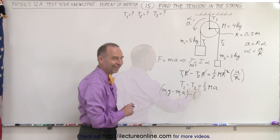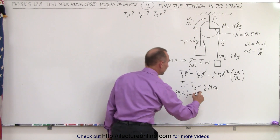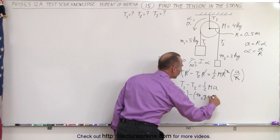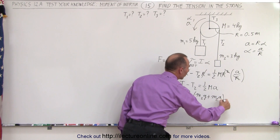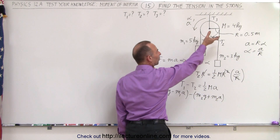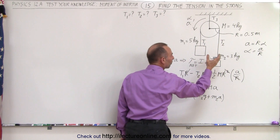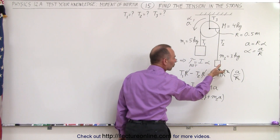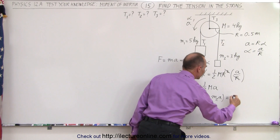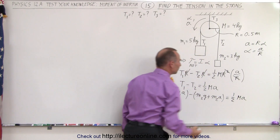And T2 is going to be m2·g plus m2·a, because the small weight is going to be accelerated upward, so the tension equals the weight of the object plus the force required to accelerate it upward, and that equals one-half M times a.